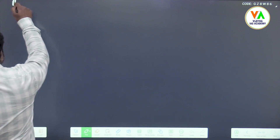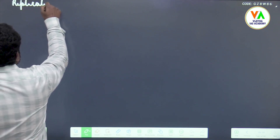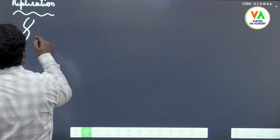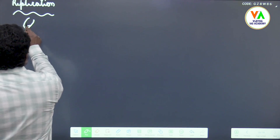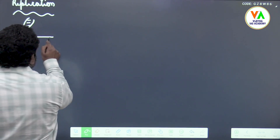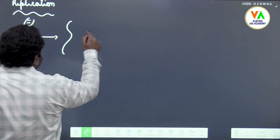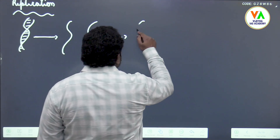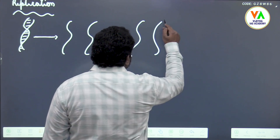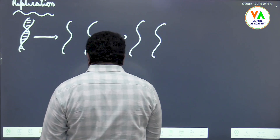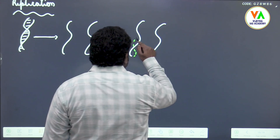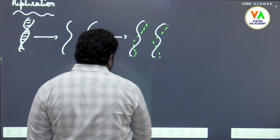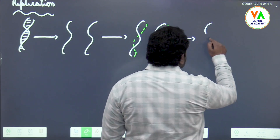Replication means: if we take DNA and separate it into two strands, each strand will be able to synthesize its complementary strand. This process is what is known as replication.